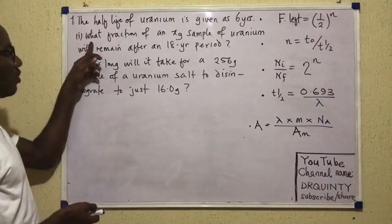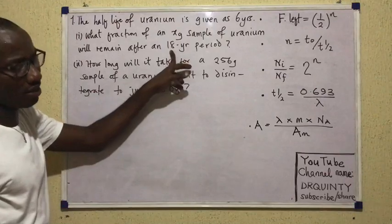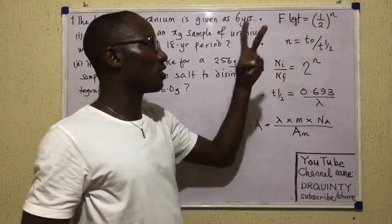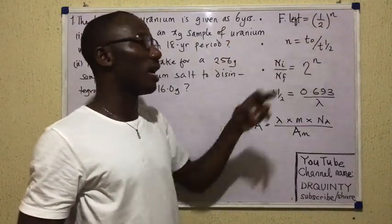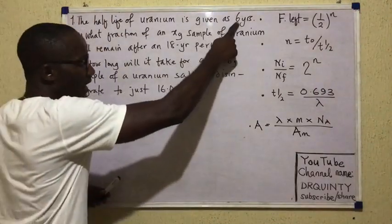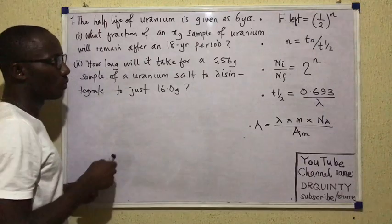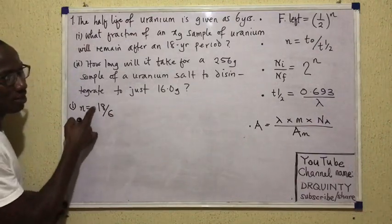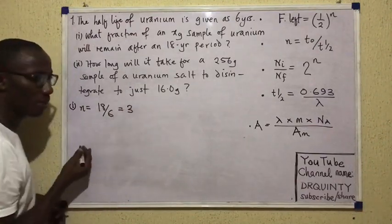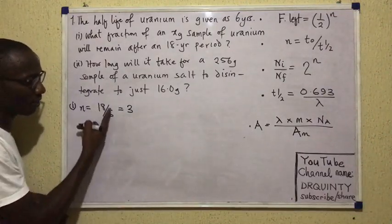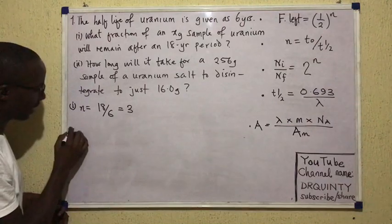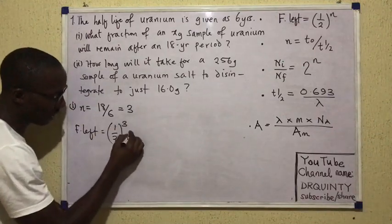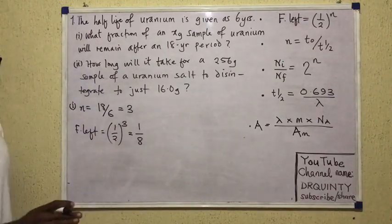If you look at the formula for fraction left, it is one-half raised to power n. To get n, I just need the two time values, T-zero and T-half. So the T-half is the half-life, and T-zero is the given time. For question one, n equals 18 over 6 — that's T-zero over T-half — which gives me 3. It's unitless because both values are in years. Now that I have n, fraction left equals (1/2)³ = 1/8. That's the answer. So 1/8 is the fraction left.